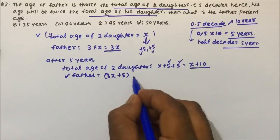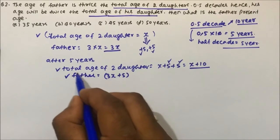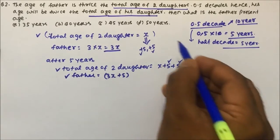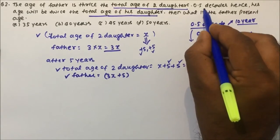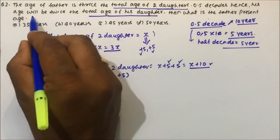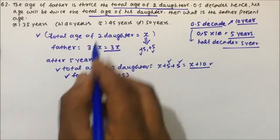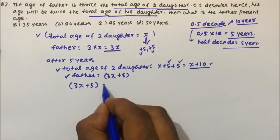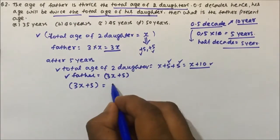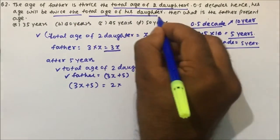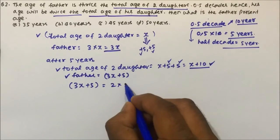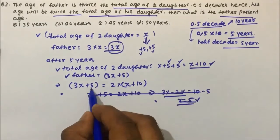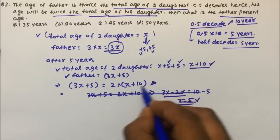After five years, the father's age increases by five and the total daughters' age increases by ten. Reading the question again: 0.5 decades hence, the father's age will be twice the total age of his daughters. So: father's age after five years is 3x + 5, and it equals twice the daughters' total age, which is 2 into (x + 10). What is the father's present age?